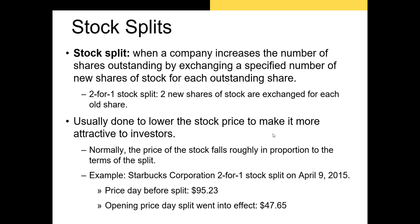Now let's talk about stock splits. Stock splits occur when a company increases the number of shares outstanding by exchanging a specific number of new shares for each outstanding share. In a two-for-one stock split, a firm gives two new shares to every shareholder in exchange for one old share. Tesla, for example, did a four-for-one stock split — if you owned one share before the split, you'd own four shares after. The main reason this is done is to decrease the share price to make it more attractive to retail investors. When Starbucks underwent a two-for-one split in 2015, the share price prior was $95.23, and after the split it became $47.65 — essentially cut in half.